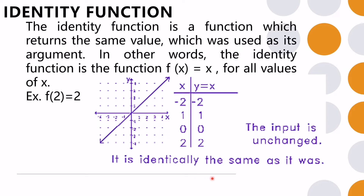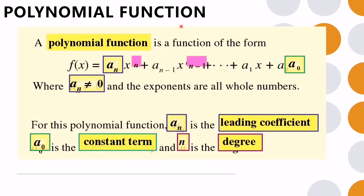We also have the polynomial function, of the form f(x) equals a-sub-n times x raised to n, plus a-sub-(n-1) times x raised to (n-1), and so on, where a-sub-n is not equal to 0 and all exponents are whole numbers. Here, a-sub-n is the leading coefficient, a-sub-0 is the constant term, and n is the degree of the polynomial.